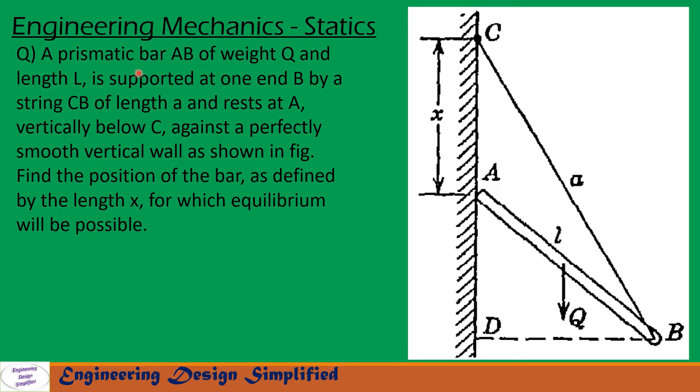Today's problem is: A prismatic bar AB of weight Q and length L is supported at one end B by a string CB of length A and rests at A, vertically below C, against a perfectly smooth vertical wall as shown in figure. Find the position of the bar as defined by the length X for which equilibrium will be possible.